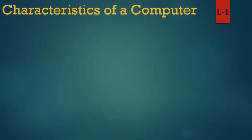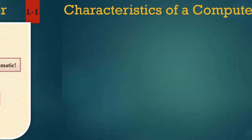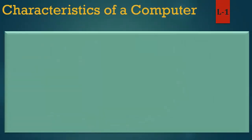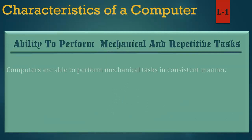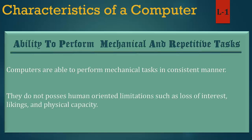Now we learn the speed characteristic in detail. Being fast means the ability to perform mechanical and repetitive tasks. Computers are able to perform mechanical tasks in a consistent manner. They do not possess human-oriented limitations such as loss of interest, personal likings and physical capacity. Main tezi se yantrik aur dohraav karya karne ki kshamata ka matlab hai. Computer lagaataar tarike se yantrik karya karne mein saksham hain. Pasand aur sharirik kshamata jaise maanav unmukh seemaaon ko nahin maante.